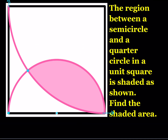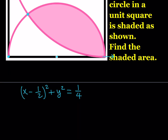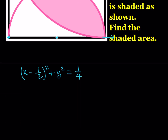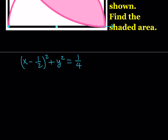The center for our quarter circle is at (1, 1) and its radius is 1 — kind of like a unit circle, but not at the origin. The equation is (x − 1)² + (y − 1)² = 1. This gives us a quadratic system we need to solve to find the intersection point.